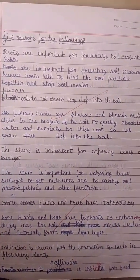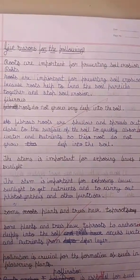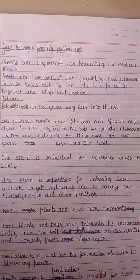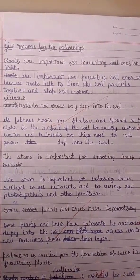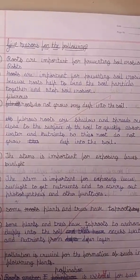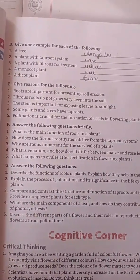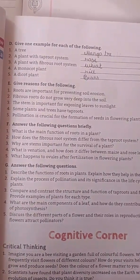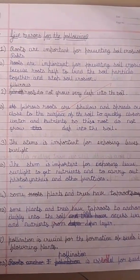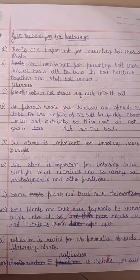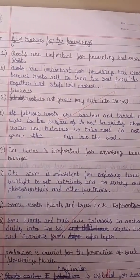Fibrous roots quickly absorb water and nutrients, so these roots do not grow deep into the soil. Third question: the stem is important for exposing leaves to sunlight. Answer: the stem is important for exposing leaves to sunlight to get nutrients and to carry out photosynthesis and other functions.